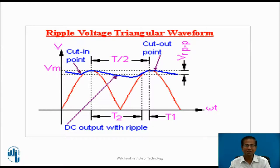Once the capacitor C is charged to its peak input value, the diode D becomes reverse biased because the cathode potential becomes greater than the anode potential. Capacitor C then discharges through the load resistance until the next half cycle when diode D2 becomes forward biased. When the anode potential of D2 crosses the capacitor voltage, D2 conducts and current flows through the lower half winding, secondary, D2, capacitor, and back to center tap. Capacitor C charges again.